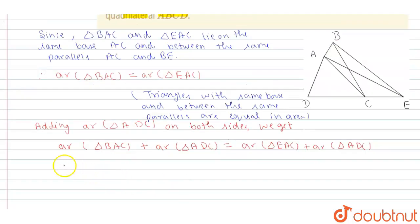So from figure we can write here area of quadrilateral ABCD is equals to area of triangle ADE.